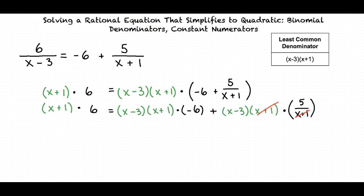Our result, after distributing and canceling, is x plus 1 times 6 equals x minus 3 times x plus 1 times negative 6 plus x minus 3 times 5.